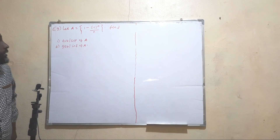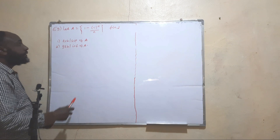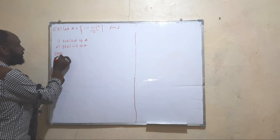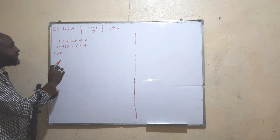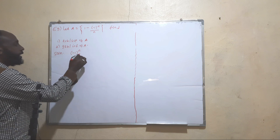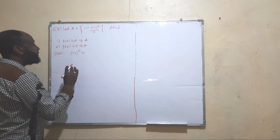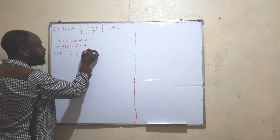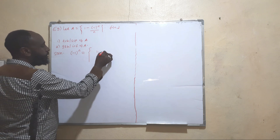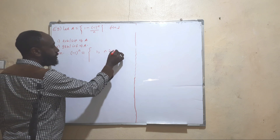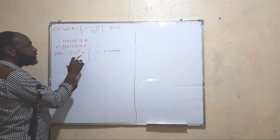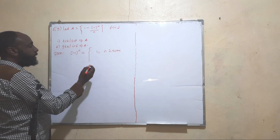So how do we approach this question? Let us do it in parts. Consider (-1)^n — this is the tricky part. (-1)^n equals 1 when n is even. For example, (-1)^2 = 1 and (-1)^4 = 1.